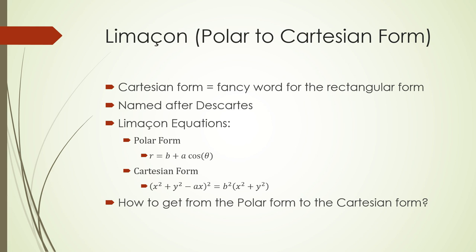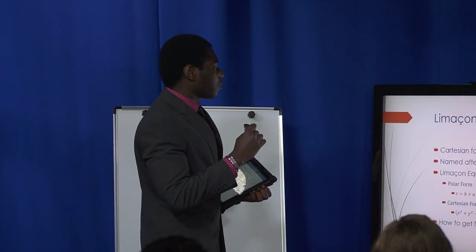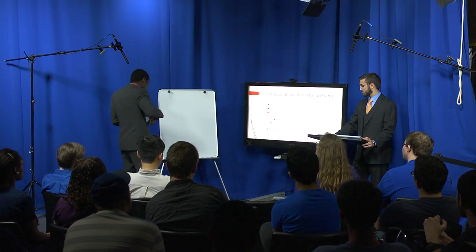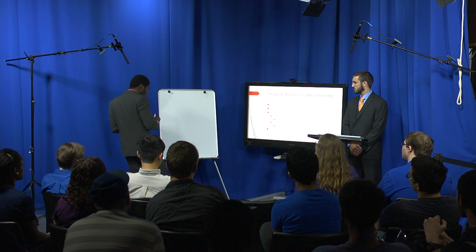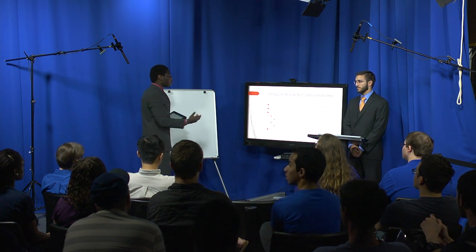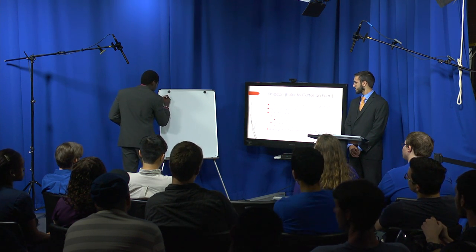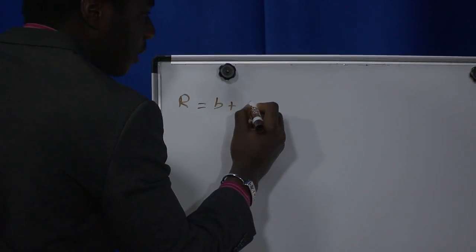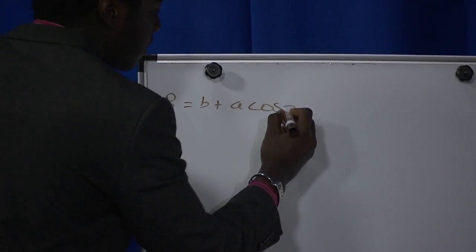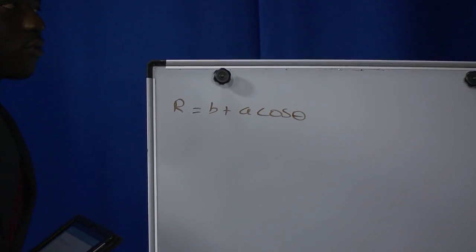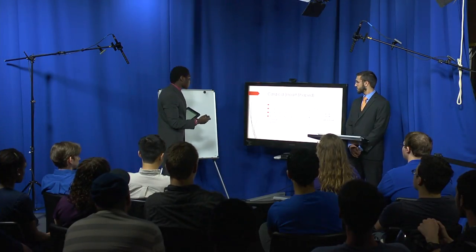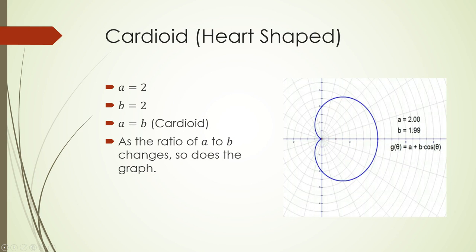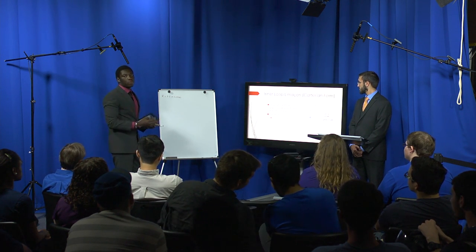How do we convert from polar form to Cartesian form? The polar form of the equation we're working with is R equals B plus A cosine of theta. Since we have cosine of theta, the graph opens on the x-axis; if it were sine theta, it would open on the y-axis. To convert, I need to know that R² equals x² plus y², and that x equals R cosine theta. The goal is to rewrite the equation using x and y.